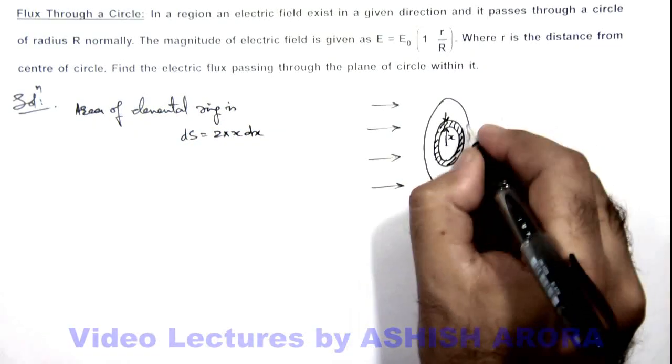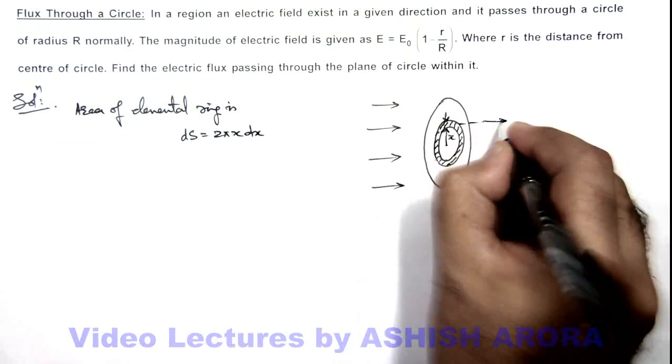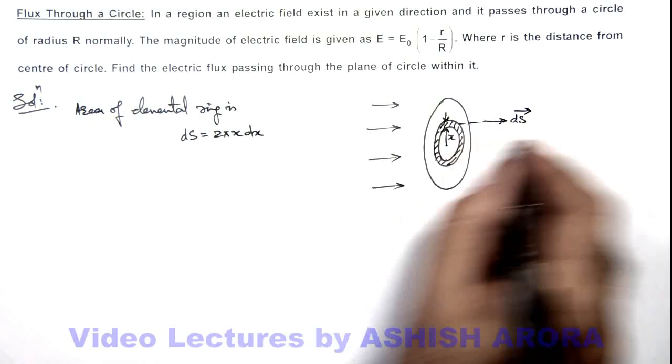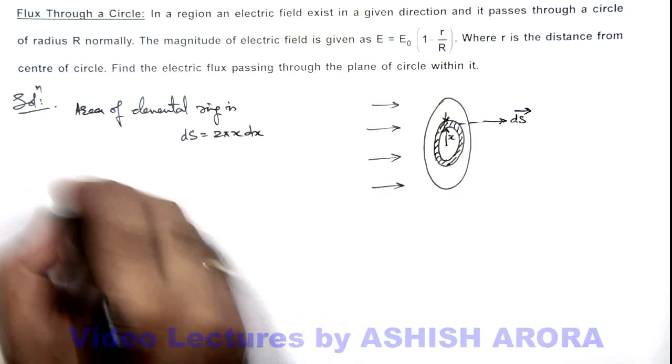And its area vector would be normal to the disc, which is dS vector, and here electric field is also in the same direction.